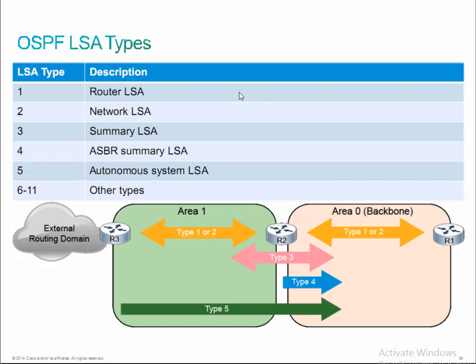I'm also going to describe LSAs based on who generates them — whether it's generated by an ABR, an ASBR, or an internal router — and what information is included in the LSA. Starting with the type 1 LSA: it is an intra-area LSA, meaning it only propagates through a single area. If I've got a hundred routers in area 1, those routers generate type 1 LSAs, but those LSAs stay within area 1. Type 1 and type 2 are intra-area LSAs — they never pass through an ABR.